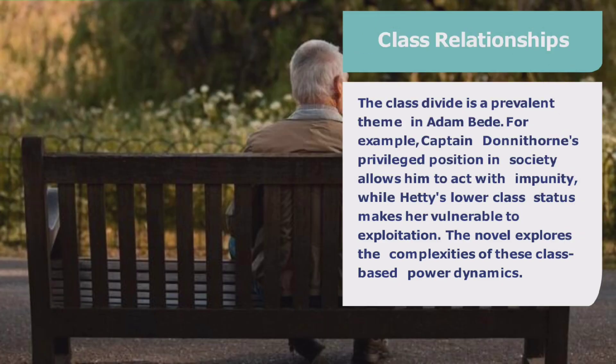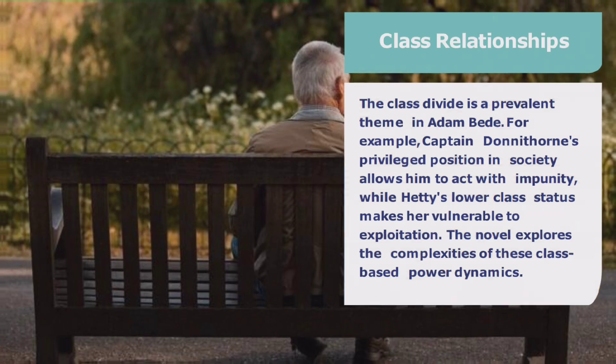Class relationships. The class divide is a prevalent theme in Adam Bede. For example, Captain Donathorn's privileged position in society allows him to act with impunity, while Hetty's lower class status makes her vulnerable to exploitation. The novel explores the complexities of these class-based power dynamics.